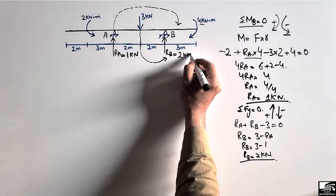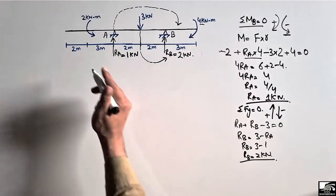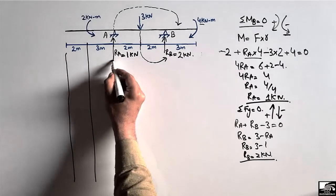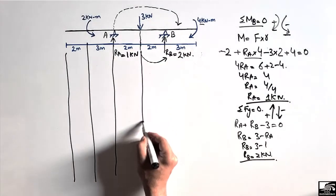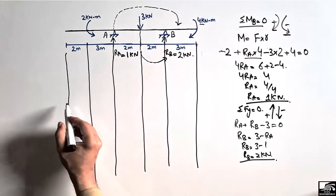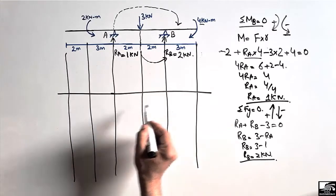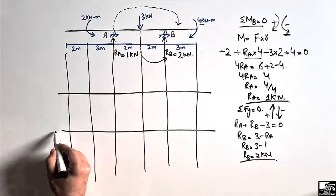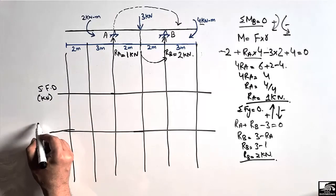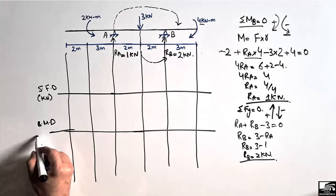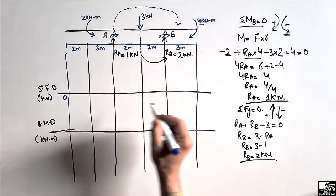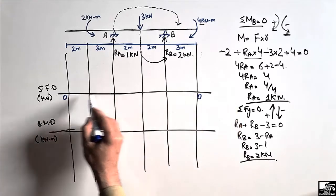After finding the support reactions, we draw the reference lines for the shear force and bending moment diagrams. The shear force diagram unit is kilonewton and the bending moment diagram unit is kilonewton·meter. We start from the horizontal reference line at zero and begin from the left end of the beam.